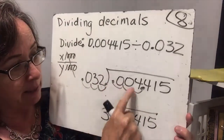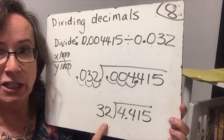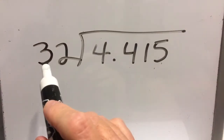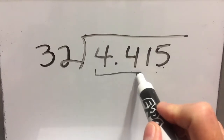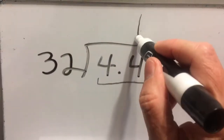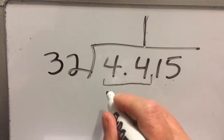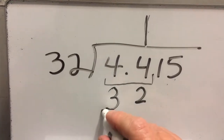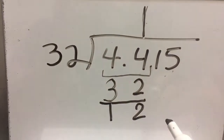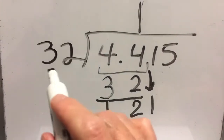Now we have 4.415 divided by 32. We can ignore the rest because the decimal is now in the right place, so this is our much simpler problem. 32 doesn't go into 4, so we put 32 into 44, and that goes one time. The 1 goes above the 44. 1 times 32 is 32, we subtract and get 12. Since 12 is less than 32, we bring down the 1.